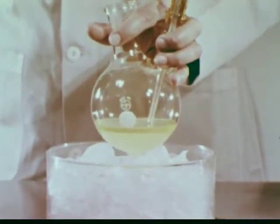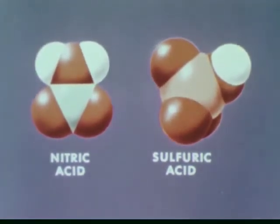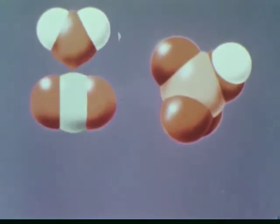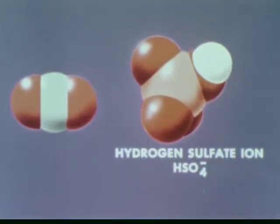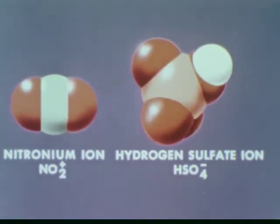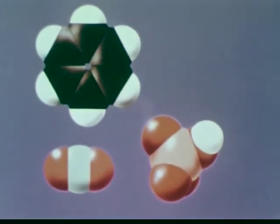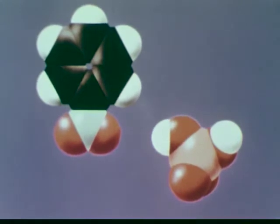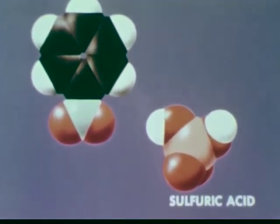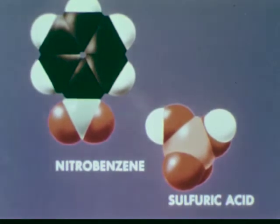Let's review what has taken place in the preparation of nitrobenzene using animated models. In the first step, nitric acid acts as a base, accepting a proton from sulfuric acid. The resulting complex splits out water. In the solution we now have two ions: a hydrogen sulfate ion, HSO4−, and a nitronium ion, NO2+. The third reactant, benzene, consists of a ring of six carbons, each bonded to a hydrogen atom. When a nitronium ion and a benzene molecule collide, a proton transfers to a hydrogen sulfate ion, which regenerates sulfuric acid. The sulfuric acid is a catalyst in this reaction. The product, nitrobenzene, is used to make dyes and other organic compounds.